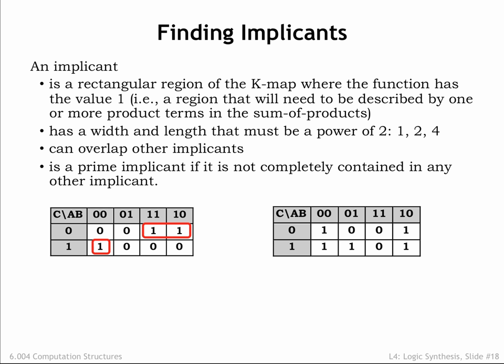Finding the prime implicants in the right-hand K-map is a bit trickier. Recalling that the left and right columns are adjacent, we can spot a 2x2 prime implicant. Note that this prime implicant contains many smaller 1x2, 2x1, and 1x1 implicants.